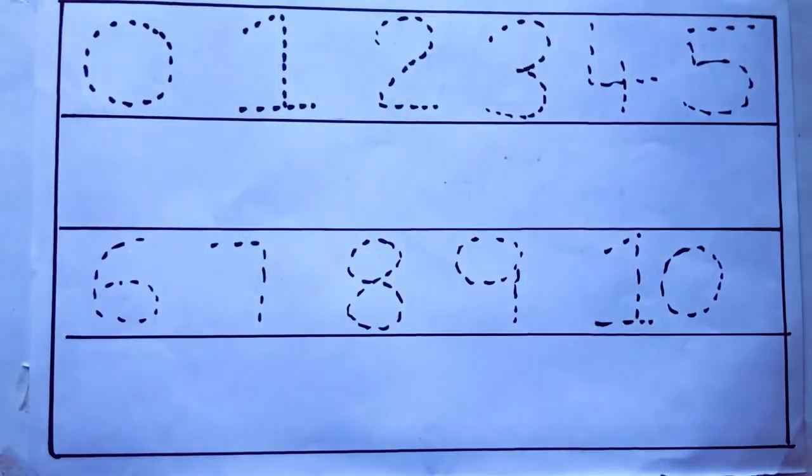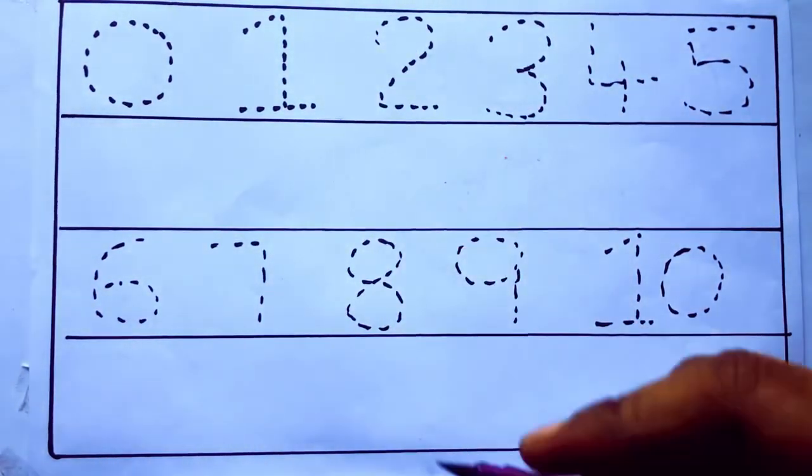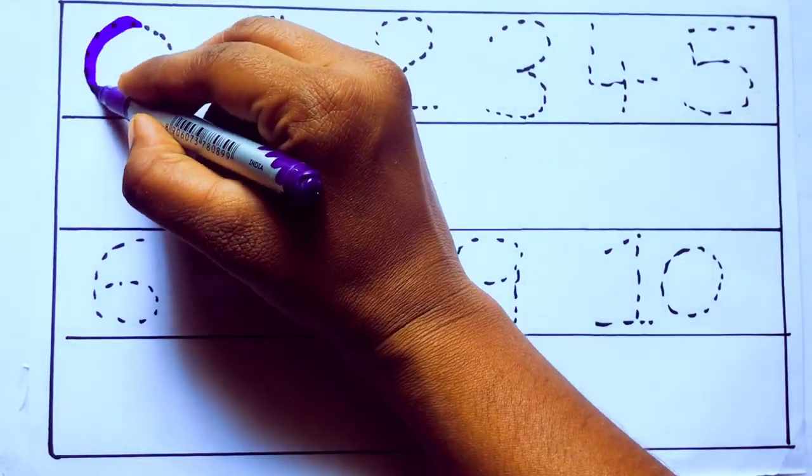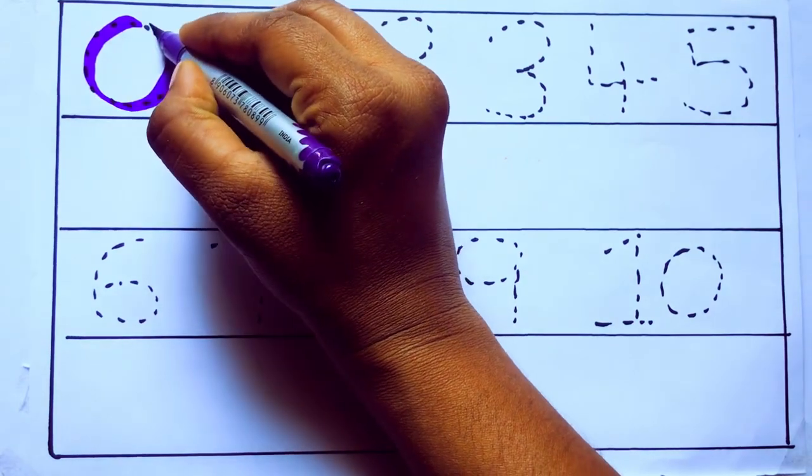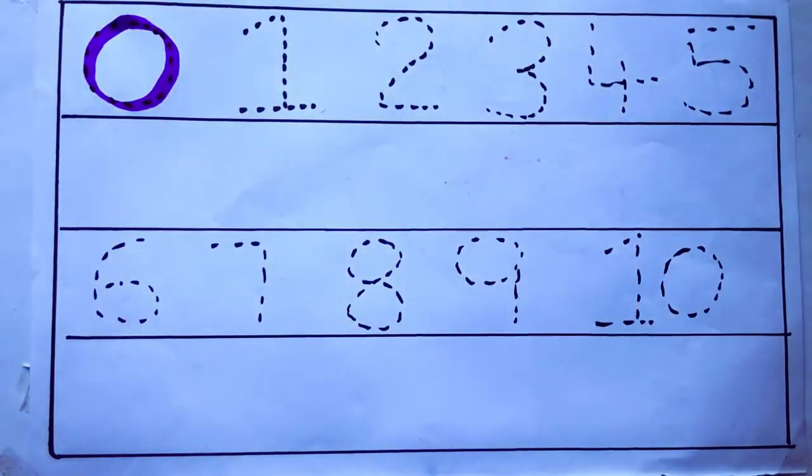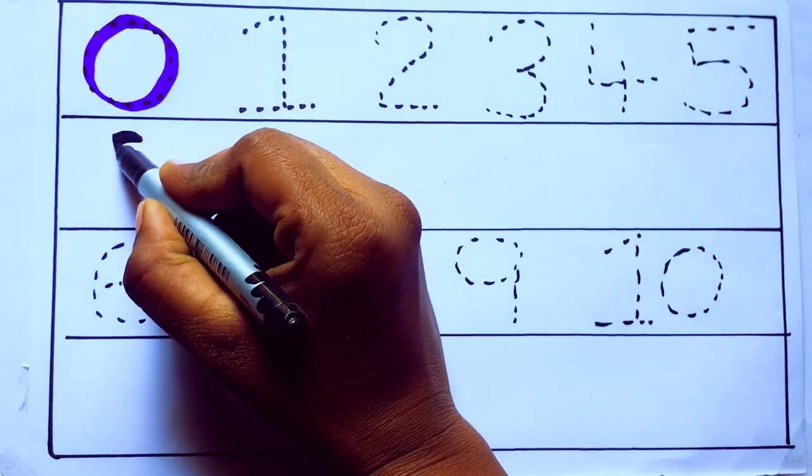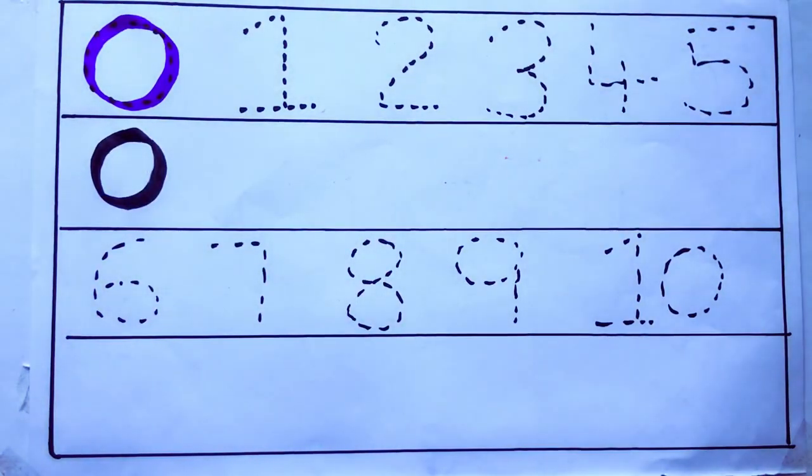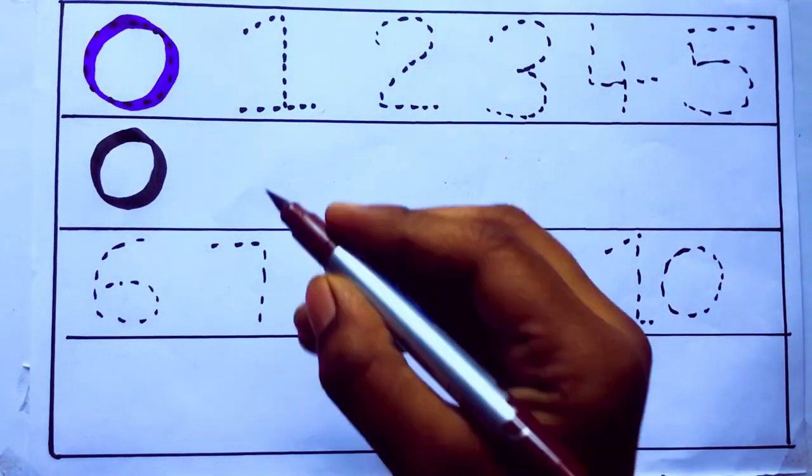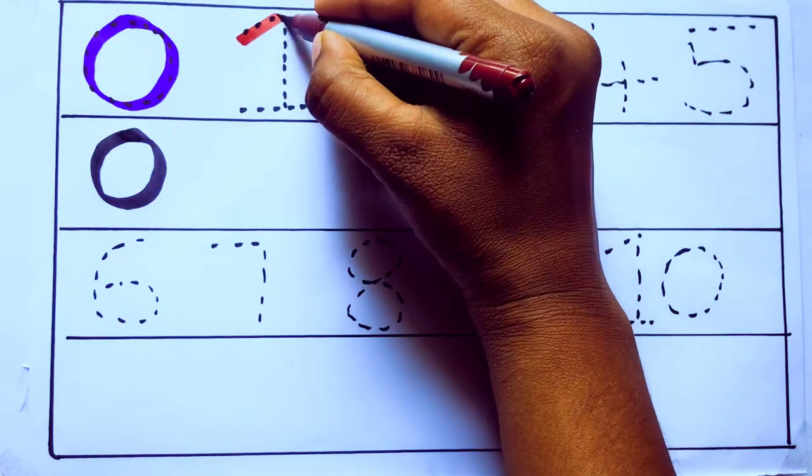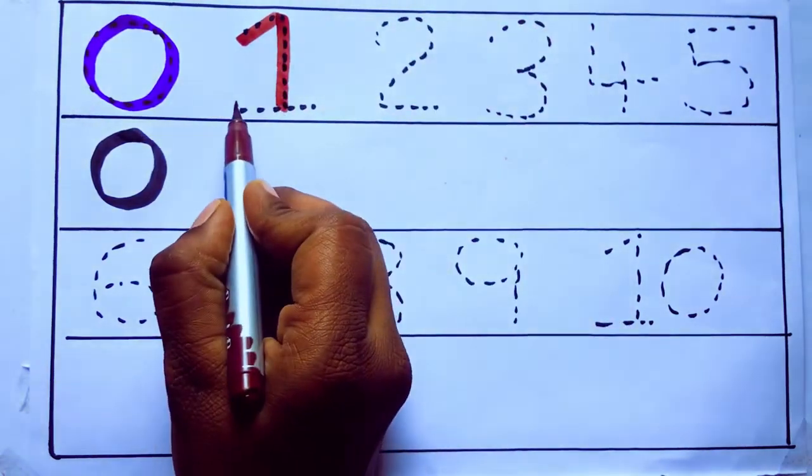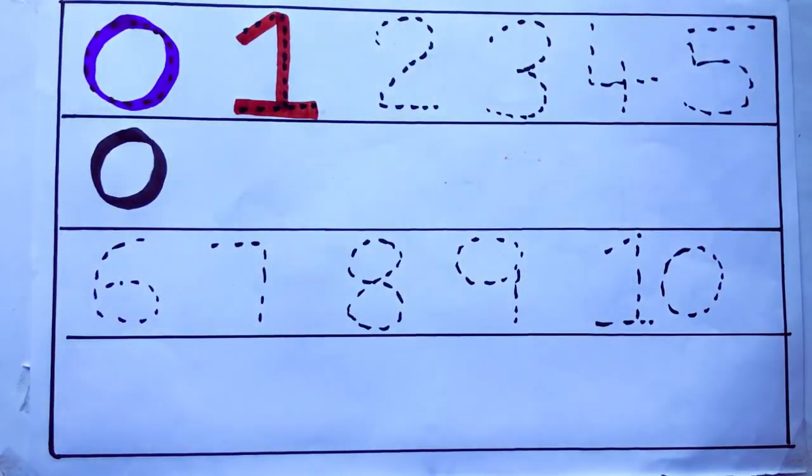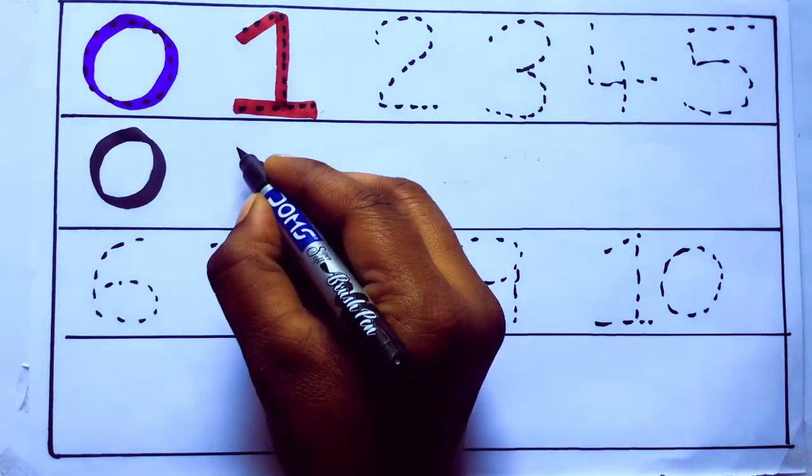Let's draw numbers. Violet color 0, Z-E-R-O, 0. Brown color, 1, O-N-E, 1, Number 1.